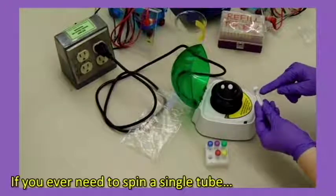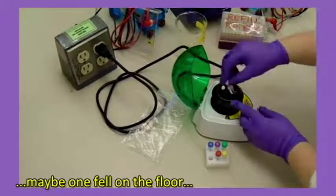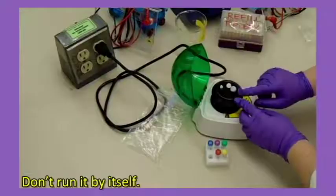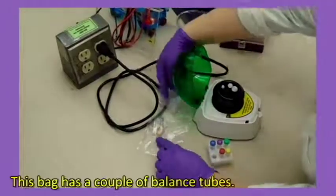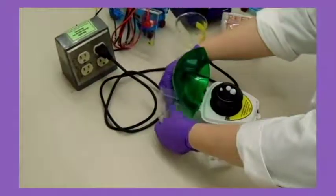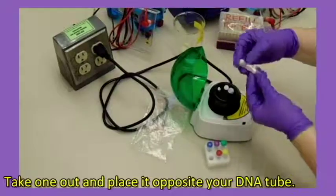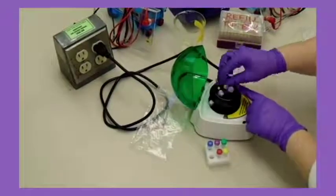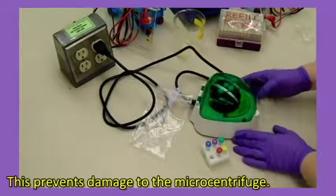If you ever need to spin a single tube, maybe one fell on the floor, don't run it by itself. This bag has a couple of balance tubes. Take one out and place it opposite your DNA tube. This prevents damage to the microcentrifuge.